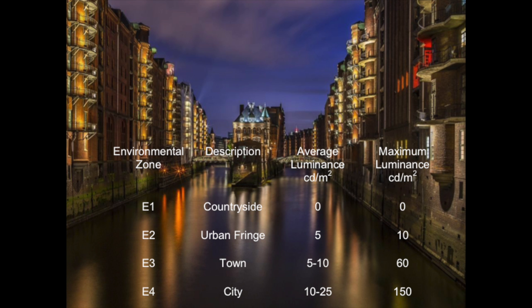If we look at some of the lighting guidance, quite logically in a city center where the ambient light is going to be higher, we're going to be applying higher light levels to create our effects. When we're in the urban fringes and outskirts of a town we apply lower lighting levels, because we don't need as much light to create the same effects. So all of these principles apply whether we're talking about interior lighting or exterior architectural lighting.